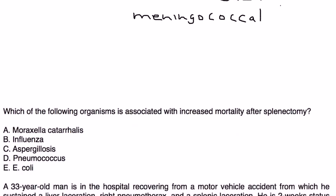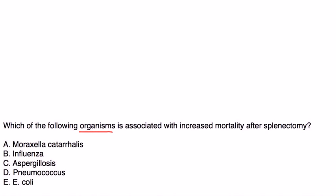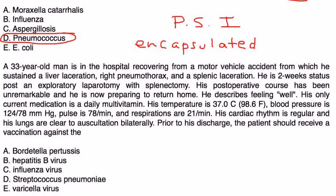Now let's take a look at a couple of vignettes. Which of the following organisms is associated with increased mortality after a splenectomy? So basically they're saying if someone is going to get an infection, which infection would they get after having a splenectomy? We're talking about encapsulated bugs. And of the choices listed, the only one is pneumococcus.